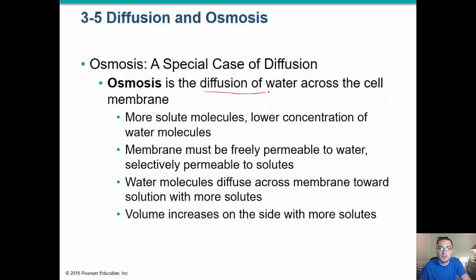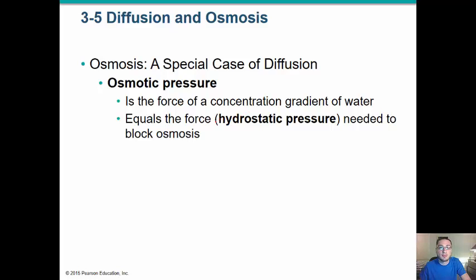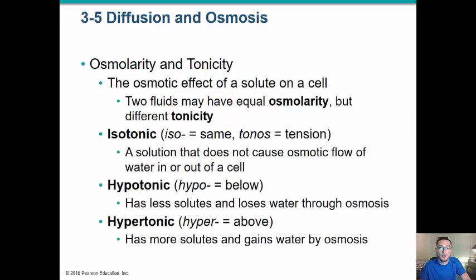Osmosis, like I said, diffusion of water. Osmotic pressure is the force of concentration gradient of the water. That water wants to go from an area where there's a lot of water to an area where there's a little bit of water. So when we talk about tonicity or the amount of solute in a solution, that's going to affect where the water is going to go. You have isotonic. That means that the solution does not cause osmotic flow of water in or out of the cell. You have hypotonic. There's less solute, and it loses water through osmosis. Hypertonic. There's more solute, so it gains water by osmosis.